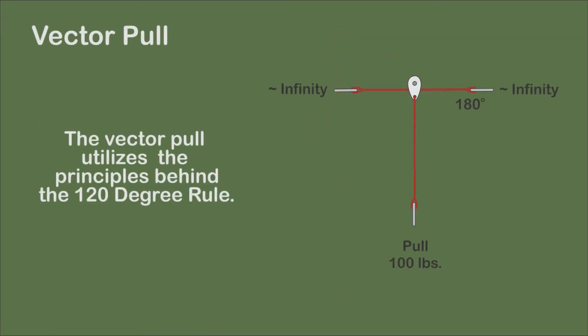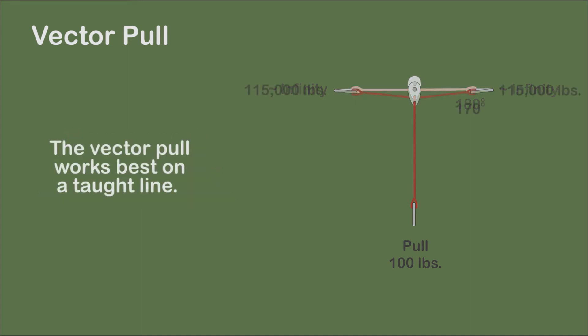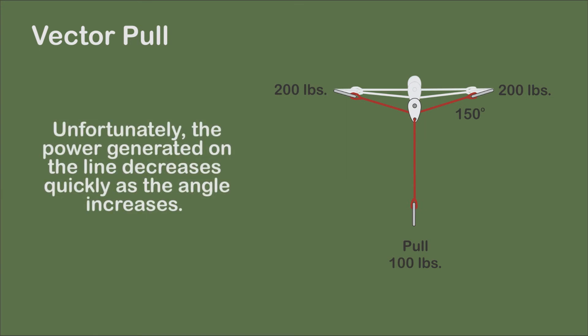The vector pull utilizes the principle of the 120 degree rule. When the angle approaches 180 degrees on a taut line, a small load on the line approaches infinity on the anchors. As the angle increases even slightly, the load on the anchors decreases quickly.